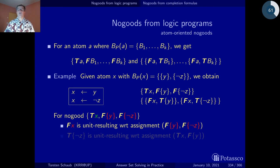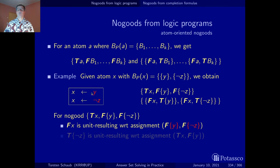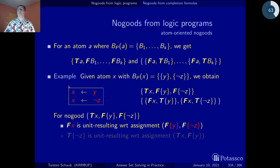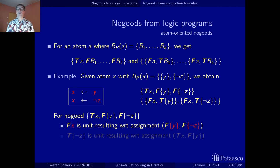So we can deduce from the fact that both bodies are false that x must also be false. If we found out that both bodies have been found to be false, unit propagation gives us that x is false. This means none of the rules that could provide x apply, hence x must be false — and this is reflected by this unit propagation on the no-good level.